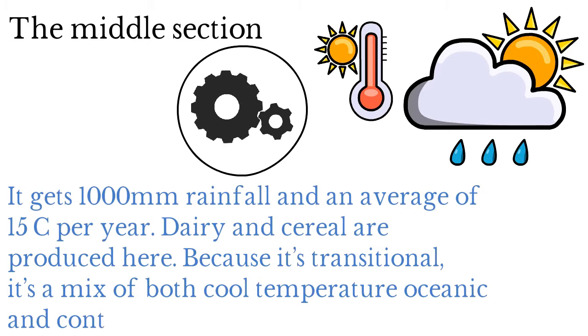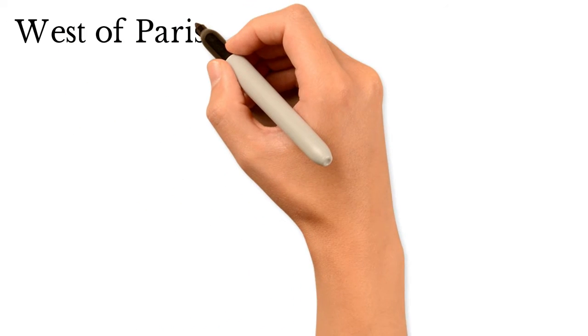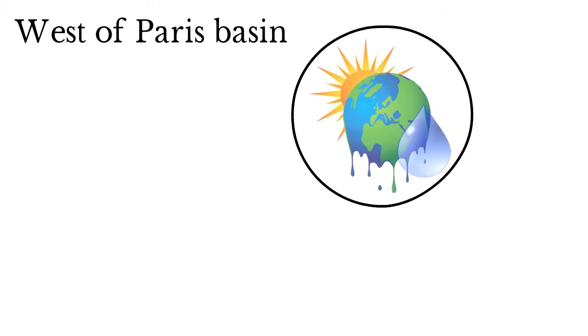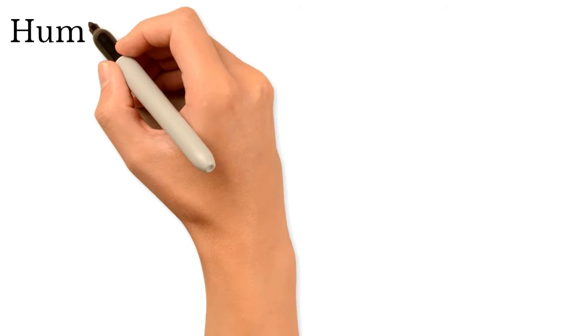The west of Paris Basin is a continental climate with 800 millimeters of rainfall a year and an annual temperature of about 17 Celsius. It produces vines there.